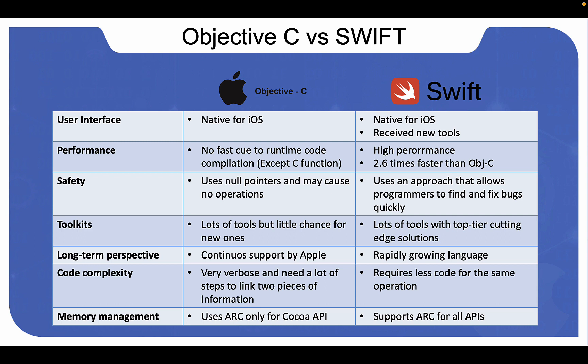Again, this is another dimension where Swift clearly wins over Objective-C. iOS applications created before 2014 are most likely written in Objective-C simply because Swift didn't exist yet. Today, it's quite common for companies to consider converting Objective-C code to Swift — rarely the other way around. Importantly, you can find applications written in both languages at the same time.